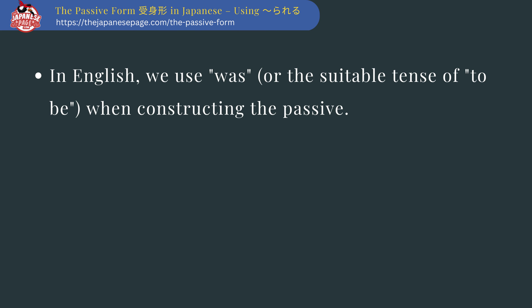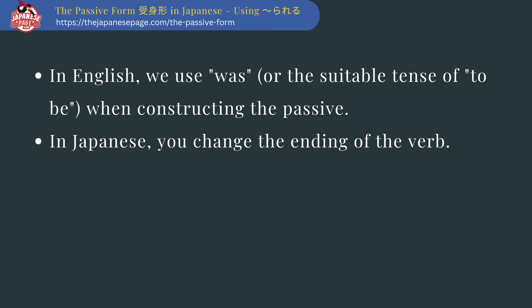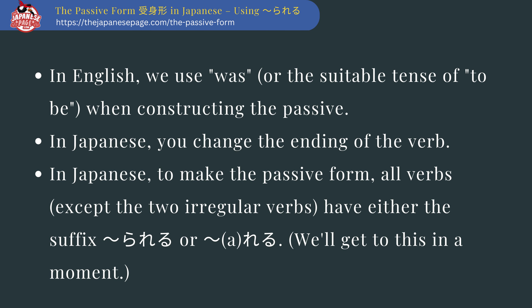In English, we use 'was' or the suitable tense of 'to be' when constructing the passive. In Japanese, you change the ending of the verb. To make the passive form, all verbs except the two irregular verbs have either the suffix rareru or reru added.